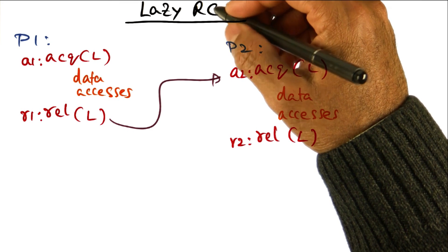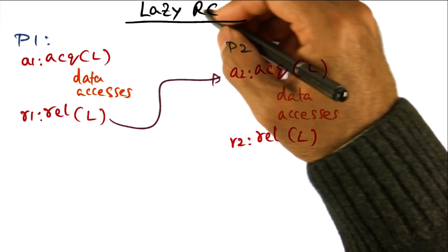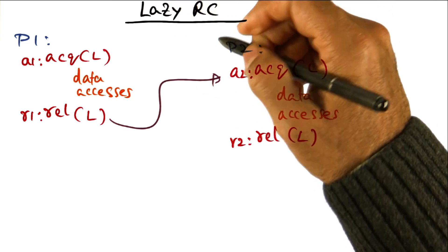Now I'm going to introduce you to a lazy version of the RC memory model, and it's called LRC, stands for lazy RC.